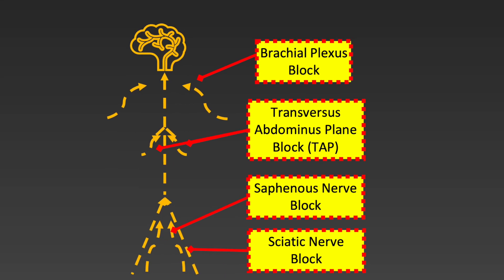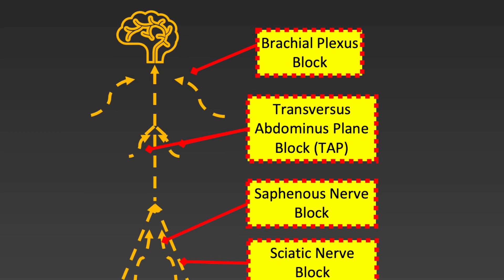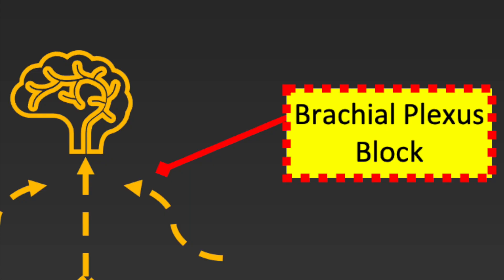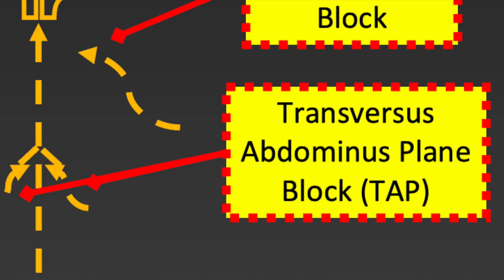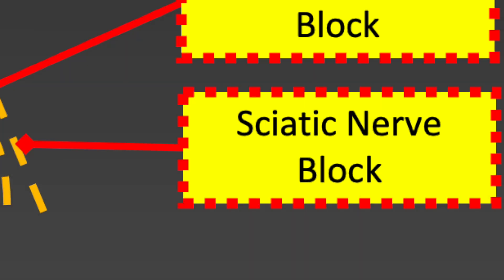So from top to bottom, here are the most common nerve blocks we perform. They include the brachial plexus, transversus abdominis plane — or TAP — saphenous nerve, or adductor canal, and the sciatic nerve.